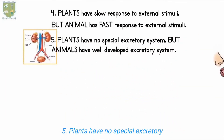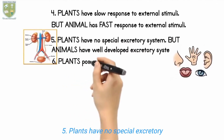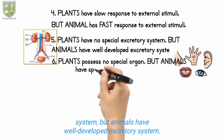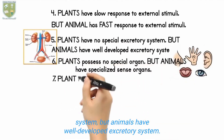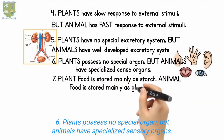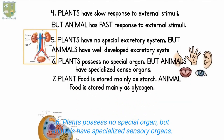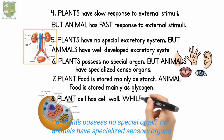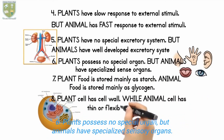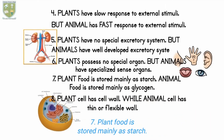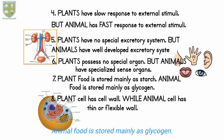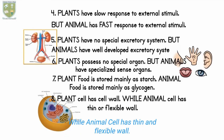5. Plants have no special excretory system, but animals have a well-developed excretory system. 6. Plants possess no special sense organs, but animals have specialized sense organs. 7. Plant food is stored mainly as starch. 8. Animal food is stored mainly as glycogen. 9. Plant cells have a cell wall, while animal cells have a thin or flexible wall.